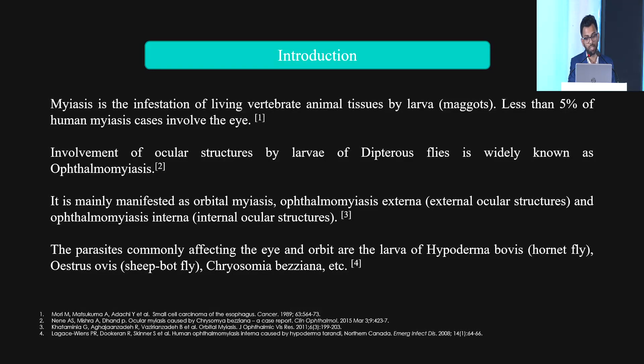The parasites commonly affecting the eye and the orbit are Hypoderma bovis, Hypoderma ovis, and Chrysomya bezziana.